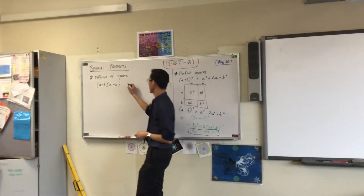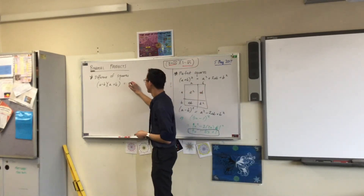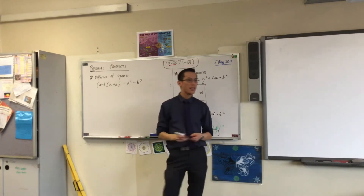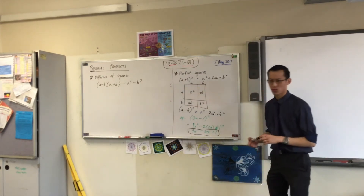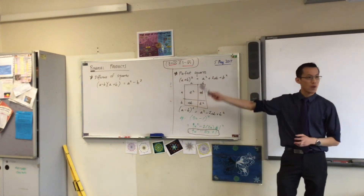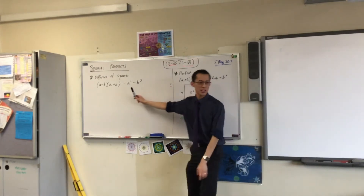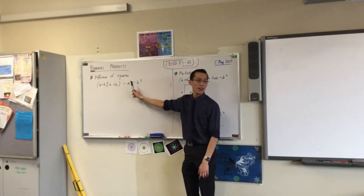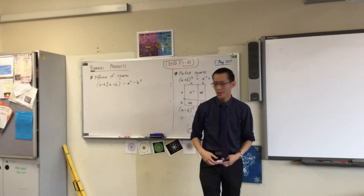What's it equal to? That bit on the right-hand side is where it gets the name — difference of squares. That's a square, that's a square, you take them away and you get the difference.